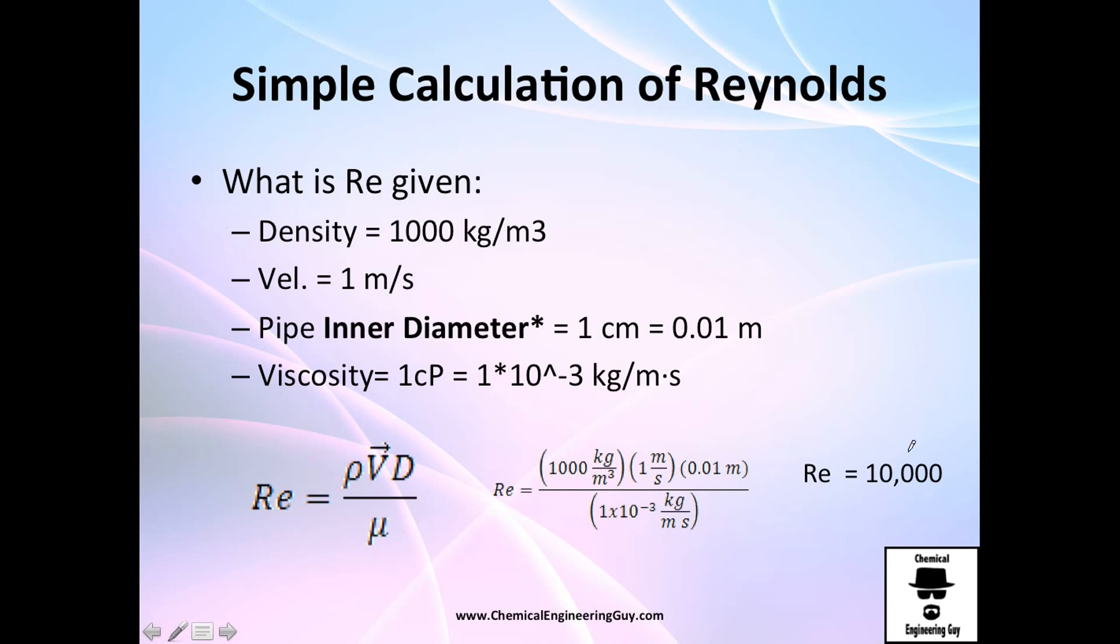We got the Reynolds number of 10,000, which is actually 10 to the fourth power. You're going to see later that this is transitioning flow. It's not enough to be turbulent flow, so we want to avoid this.